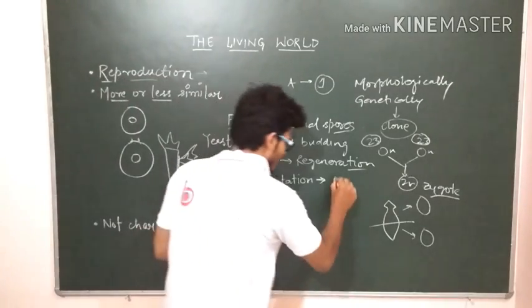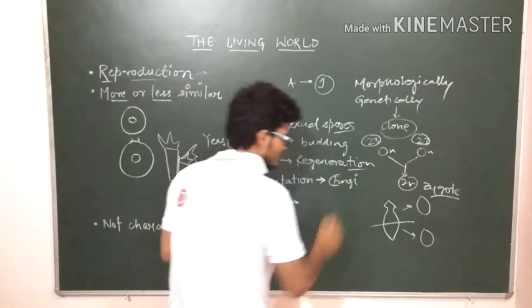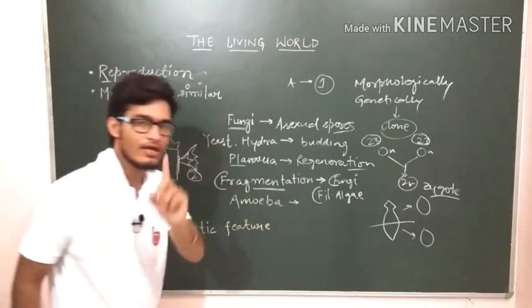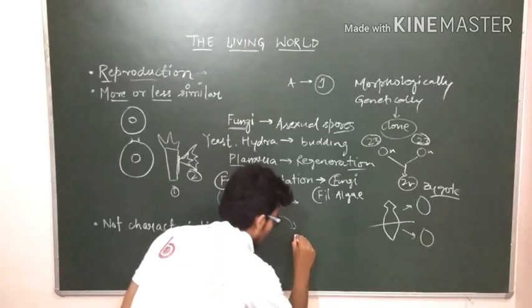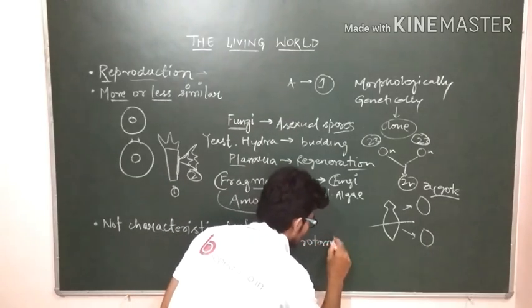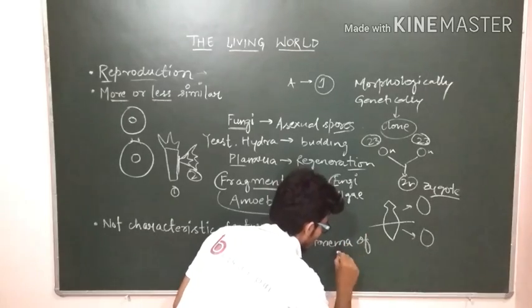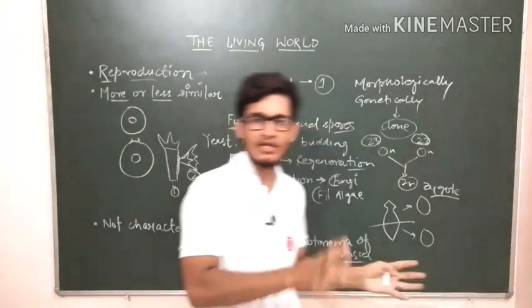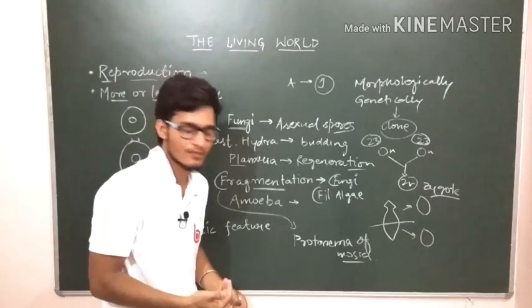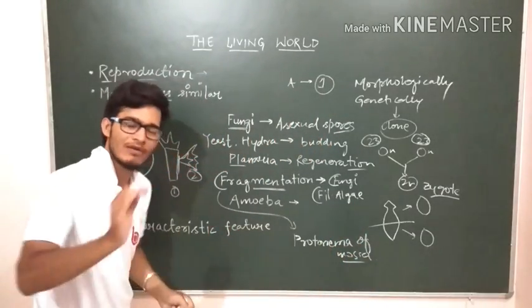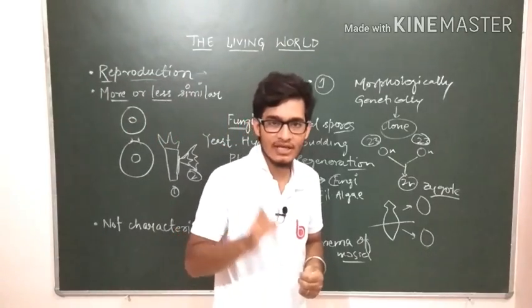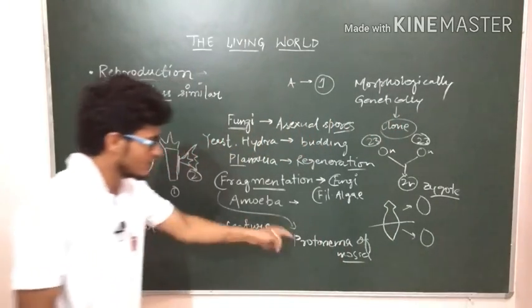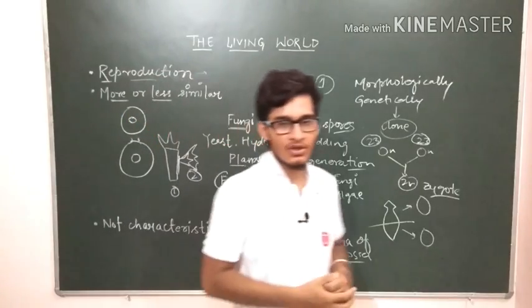This is planaria regeneration. Then fragmentation. It is shown by fungi - F for fragmentation, F for fungi, F for fragmentation, F for filamentous algae and protonema of mosses. These are the examples of fragmentation.